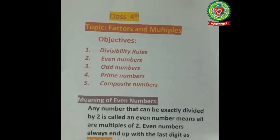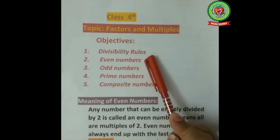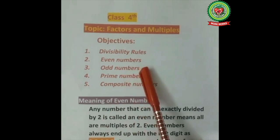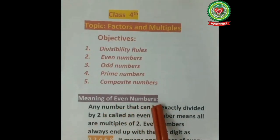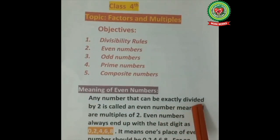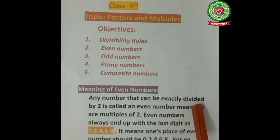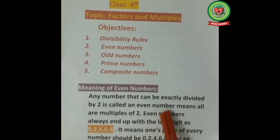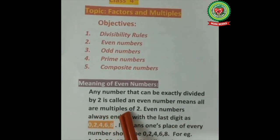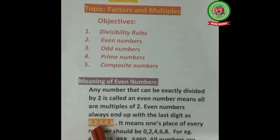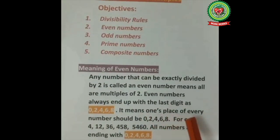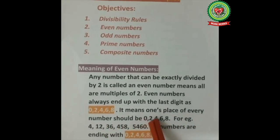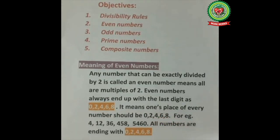Hello students! In the topic of factors and multiples, we have already done divisibility rules. Today we will recapitulate even numbers, odd numbers, prime numbers, and composite numbers. First, we will do even numbers. Any number that can be exactly divided by two — meaning the remainder is zero — is called an even number. Even numbers are all multiples of two, and they always end with the digits zero, two, four, six, or eight.